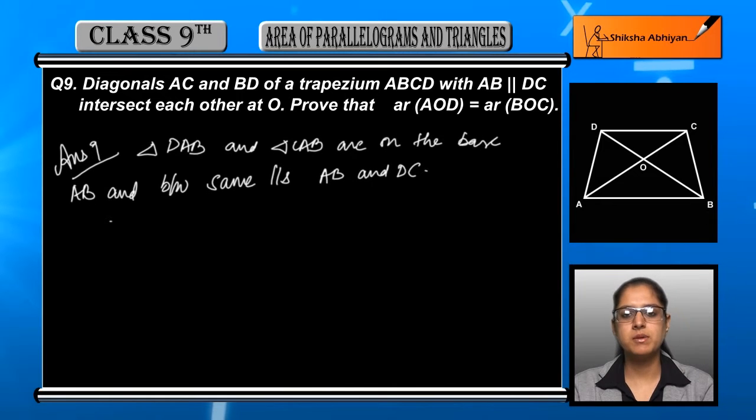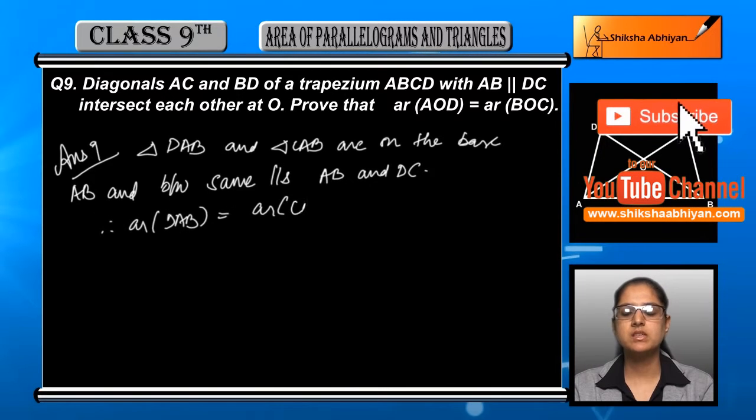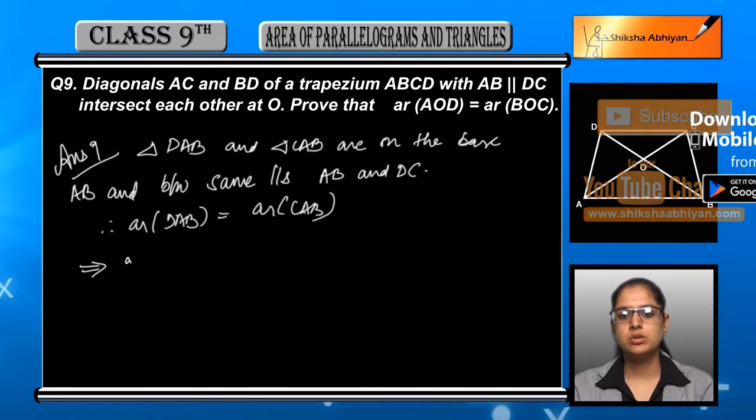So if they lie on the same base and between the same parallel lines, we can say that area of DAB is equal to the area of CAB. Both their areas are equal.